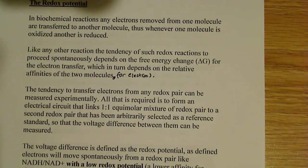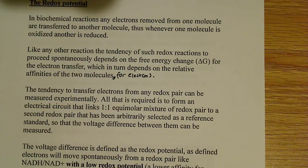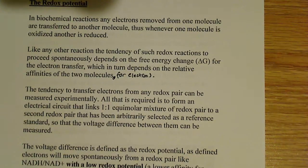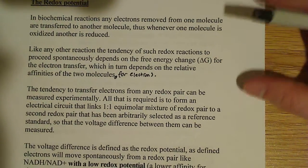In the case of redox reactions, spontaneity depends on the relative affinities of the two molecules for electrons. Essentially, how electronegative are these two molecules? How much do they want to hold on to the electrons, or how easily do they give up the electrons?